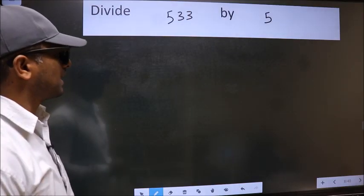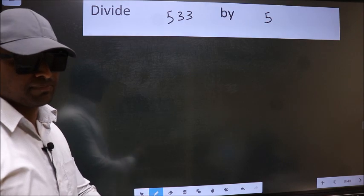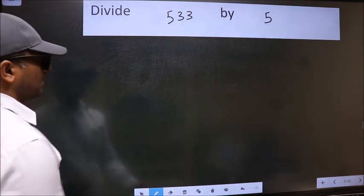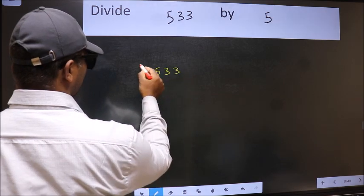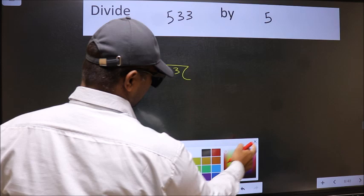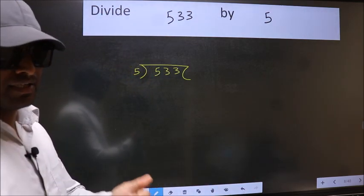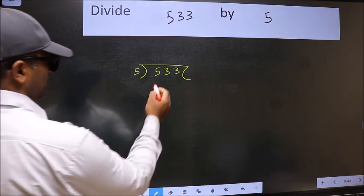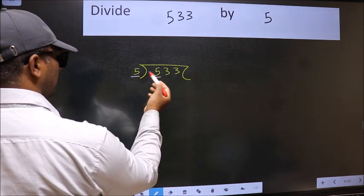Divide 533 by 5. To do this division, we should frame it in this way: 533 here and 5 here. This is step one. Next, here we have five and here also five. When do we get five in five table?